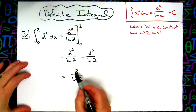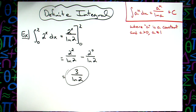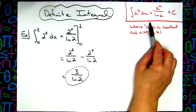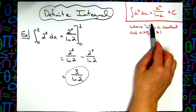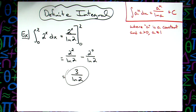And assuming that we want an exact answer — it's not been rounded — we can leave it right like that. We do not need to grab a calculator. So definitely just one quick definite integral here, relying on the fact that you have the formula memorized to be able to integrate 2 raised to the x, or any constant raised to an x.